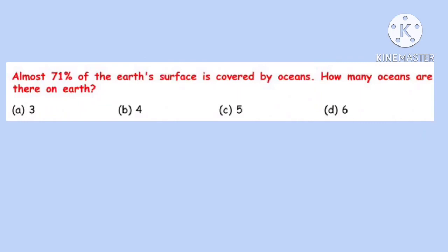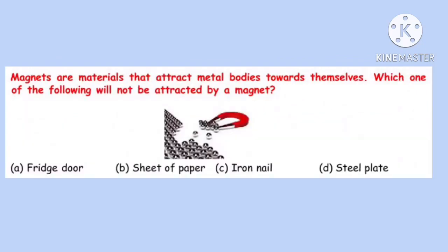Question 27. Almost 71% of the Earth's surface is covered by oceans. How many oceans are there on Earth? Correct answer is C: Five. The five oceans are the Atlantic Ocean, Pacific Ocean, Indian Ocean, Arctic Ocean, and Southern Ocean.